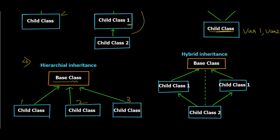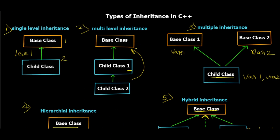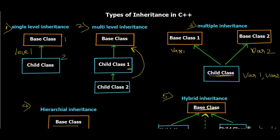The fifth type is hybrid inheritance, which combines multiple types. There is one base class, then at level one we have child class 1 and child class 2, and at level two we have child class 3 which inherits from both child class 1 and child class 2 — and by extension also inherits from the base class, shown by the dotted line. We'll go through each type individually in separate video tutorials with dedicated programs.